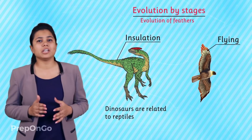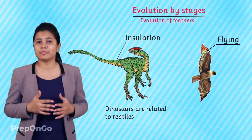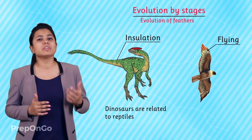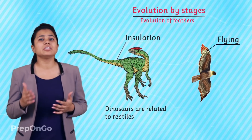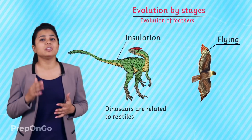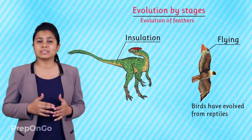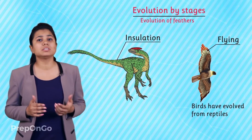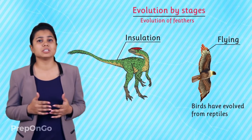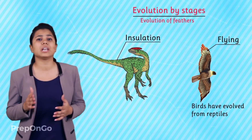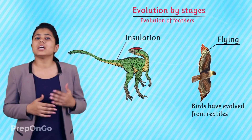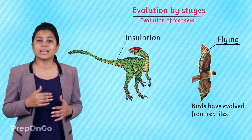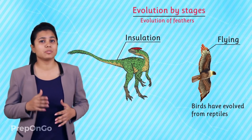In the case of dinosaurs which had feathers used for insulation, and they are related to reptiles, we can say that birds which had feathers are closely related to reptiles. In other words, birds have evolved from reptiles.